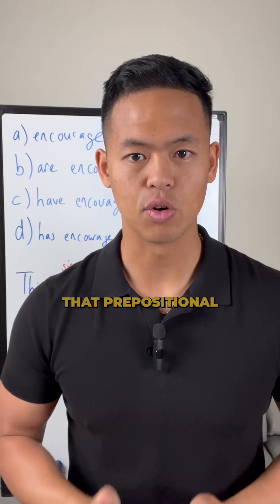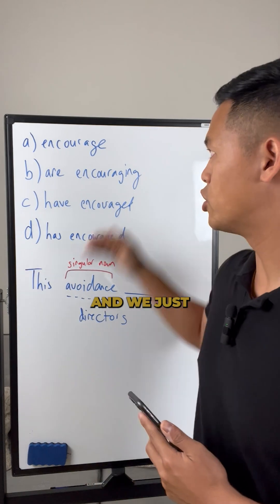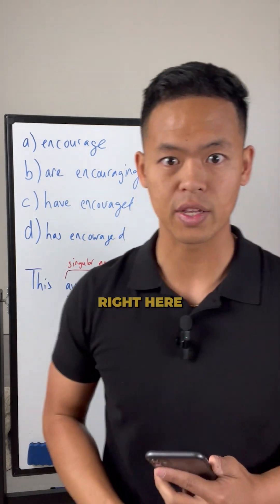Once we get rid of that prepositional phrase, we have a very clean sentence: this avoidance blanks directors. And we just want to use one of these answer choices right here. Very simple.